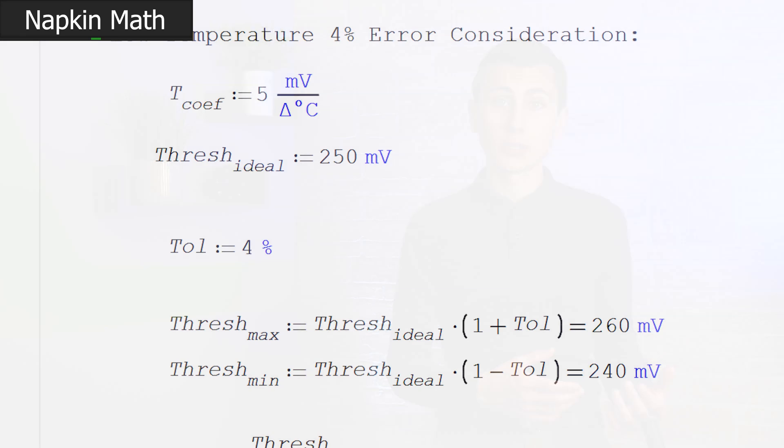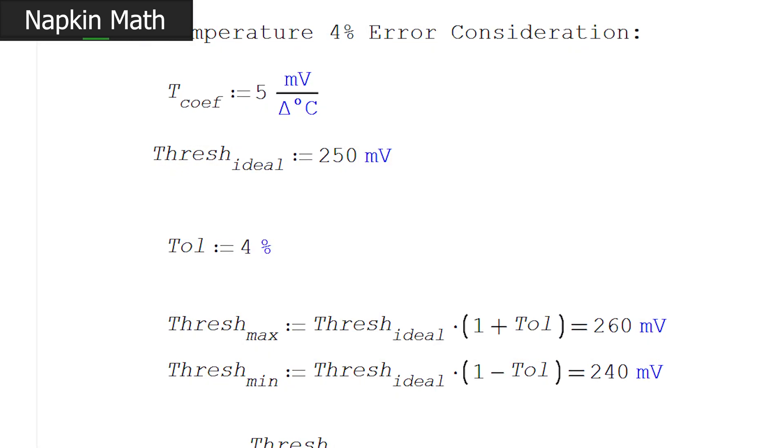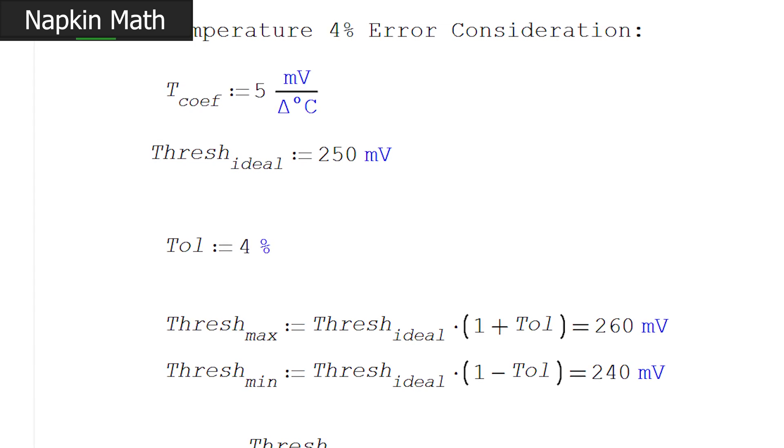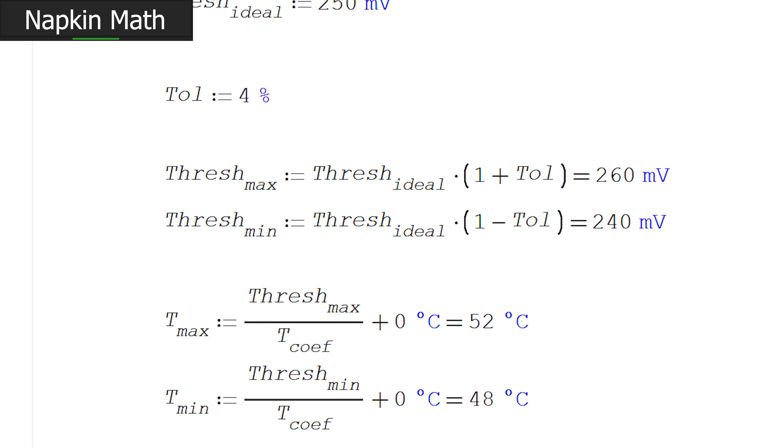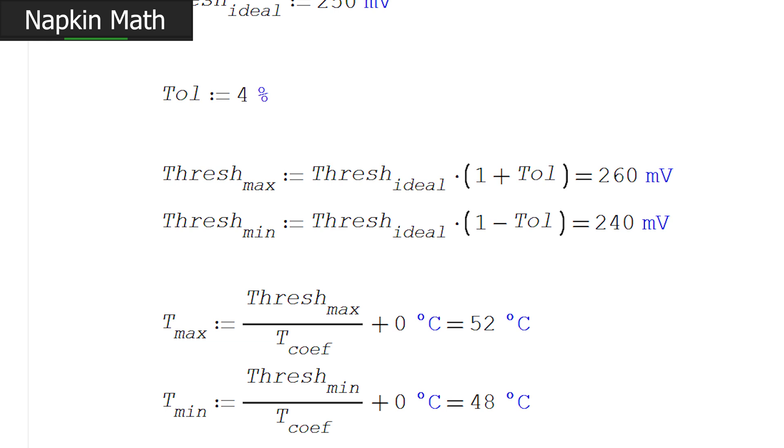Let's say our voltage threshold was off by 4%. We meant for it to be 250 millivolts, which corresponds to 50 degrees C. However, the threshold could be as high as 260 or as low as 240 millivolts. That would lead to a temperature range of 48 to 52 degrees C. All of a sudden, that 4% isn't feeling so bad. That's really not a whole lot of error.